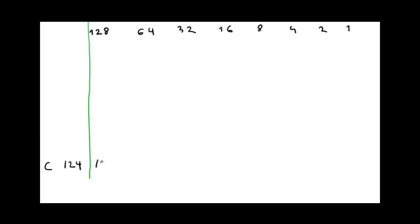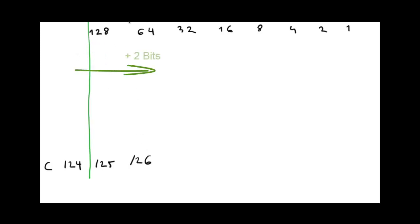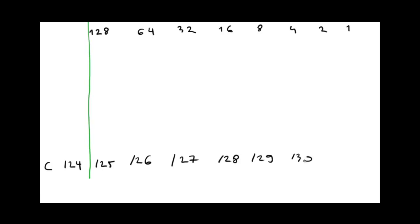We write down /25 because we borrow one bit. We write /26 because we borrow two bits, and so on: /27, /28, /29, /30, /31, and /32.